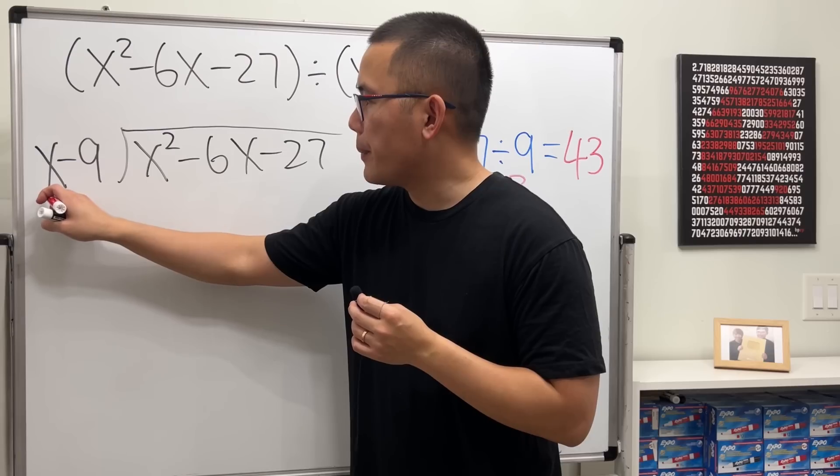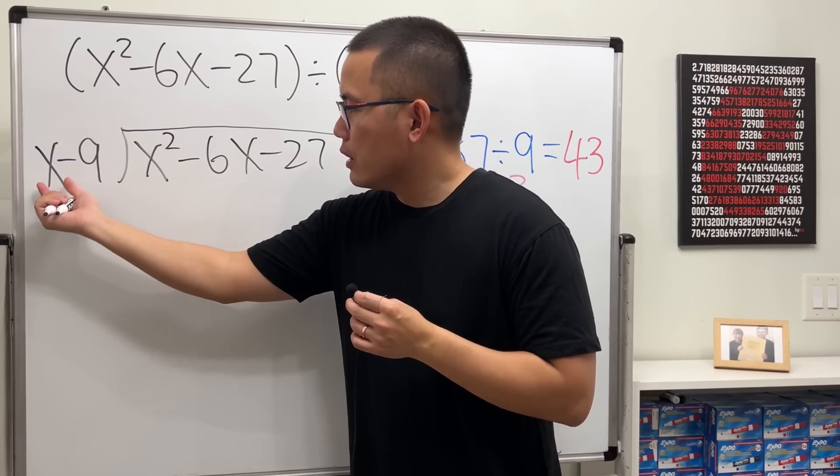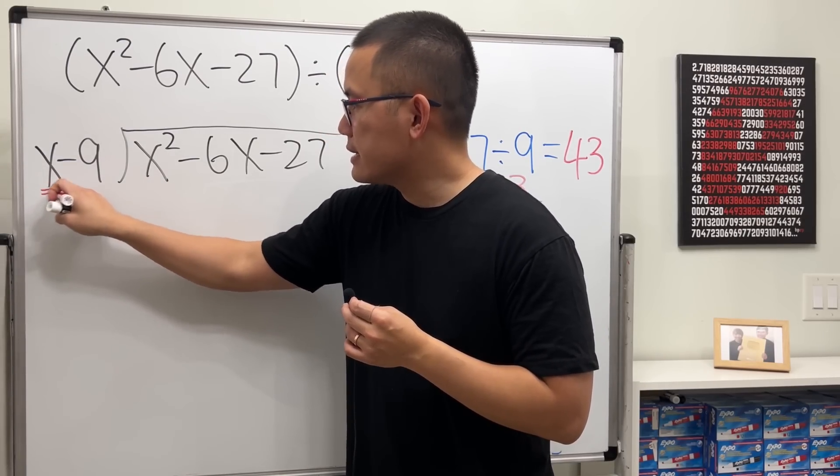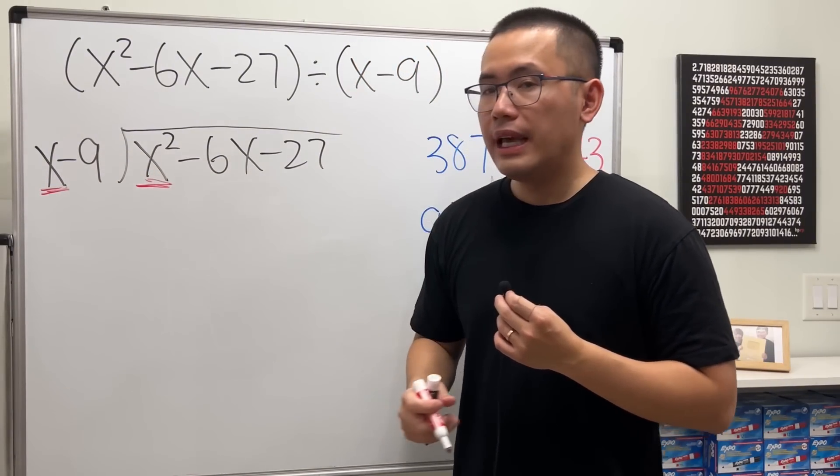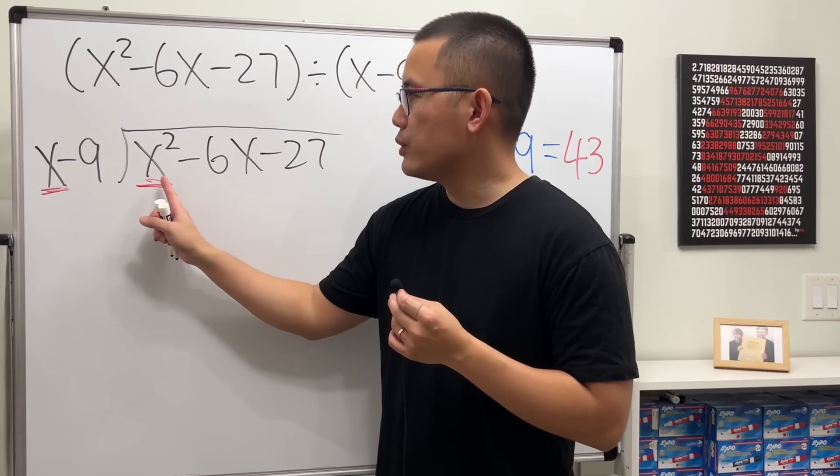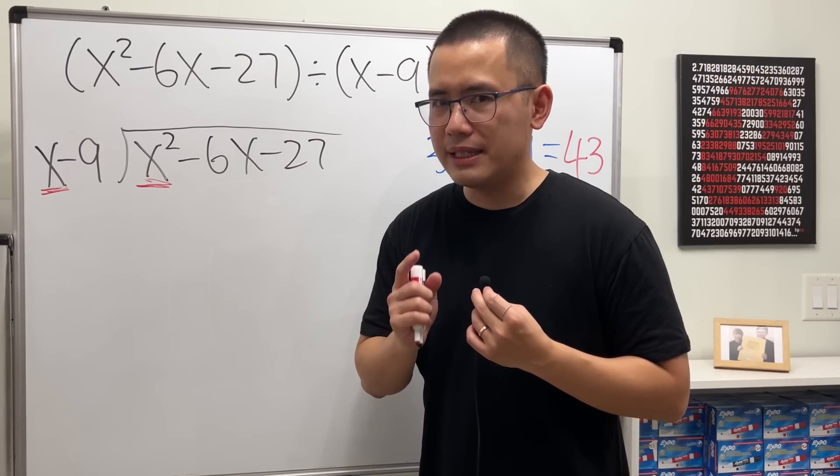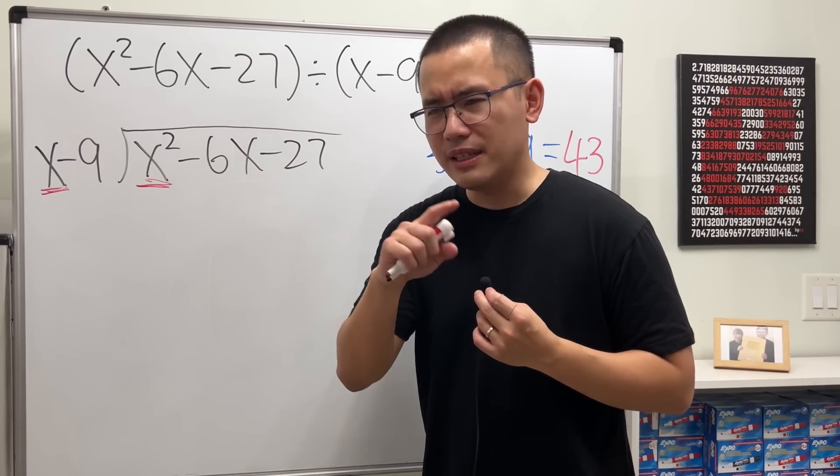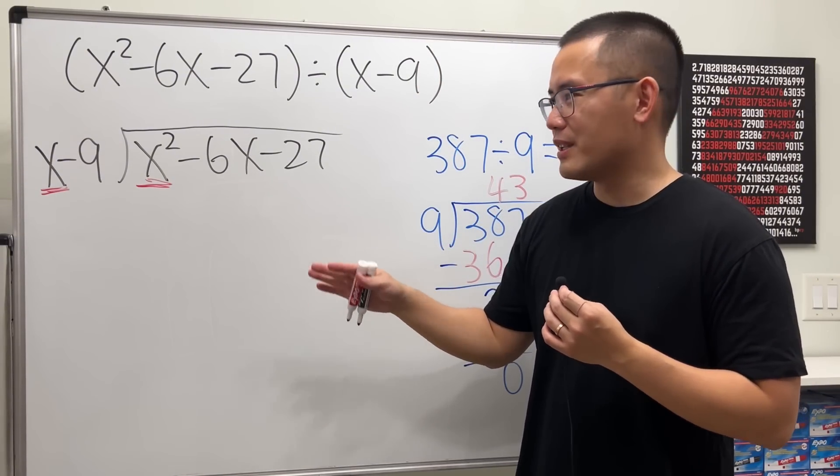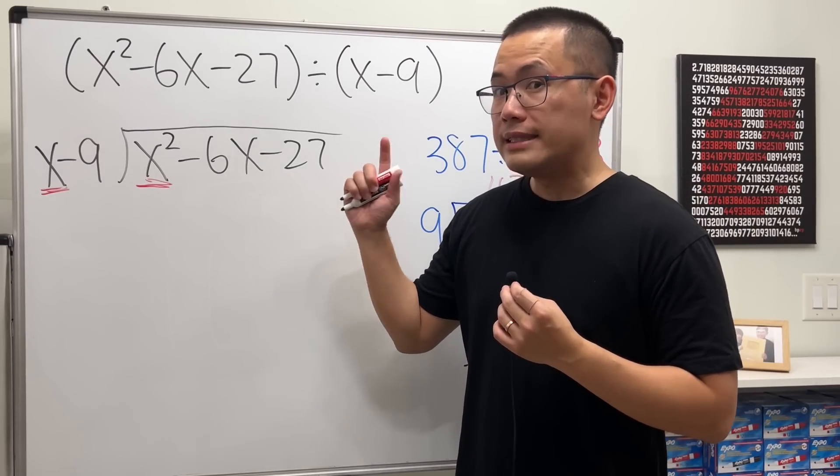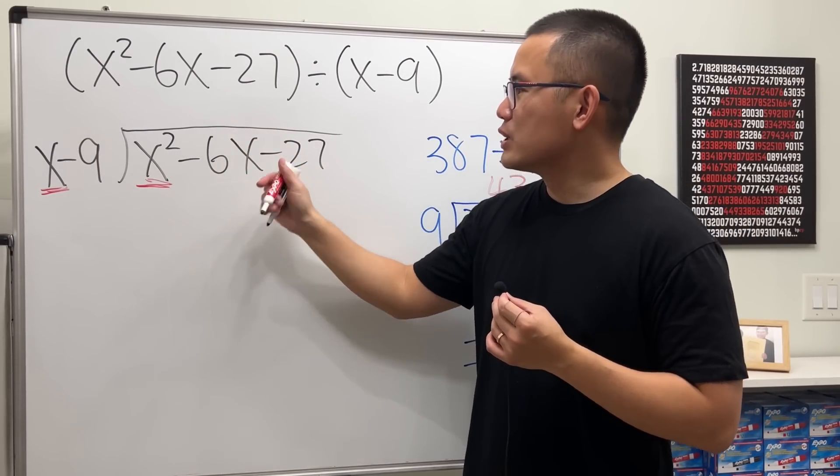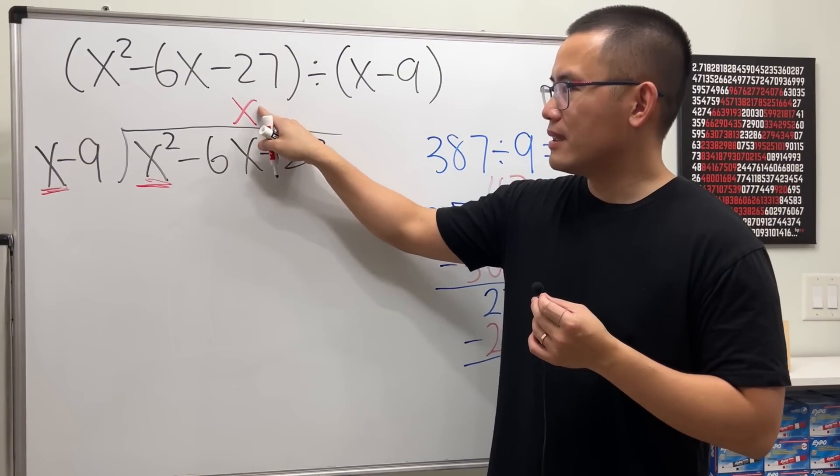What you want to do is compare the first thing of the outside and the first thing of the inside. So just look at x and x squared. And you ask yourself, how many times does x go into x squared? The answer for that is x, because x times x is x squared. I know it sounds kind of weird, but let me just write it down and you'll see it. I said the answer is x. You want to line up with the x term, so we want to put x here.